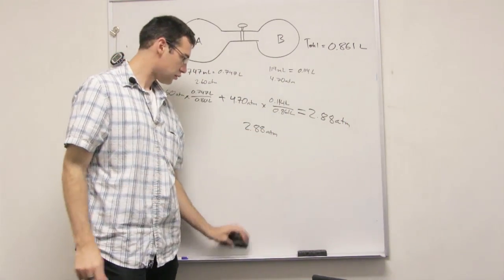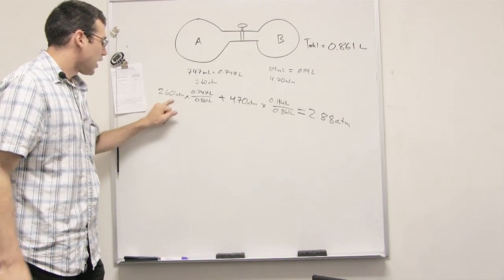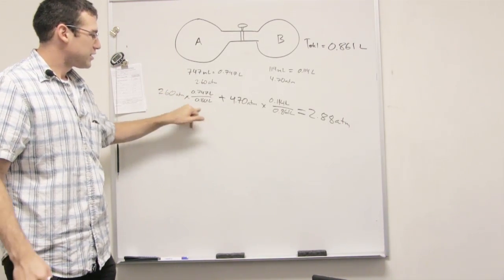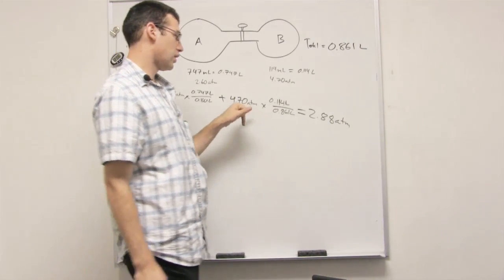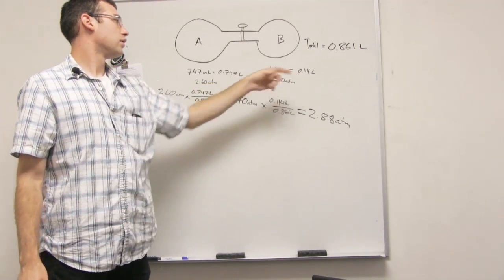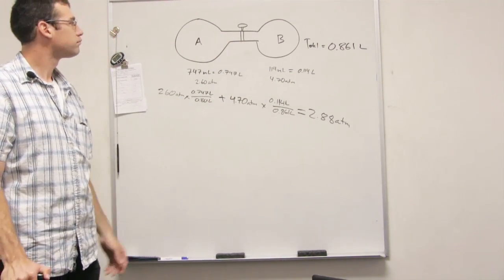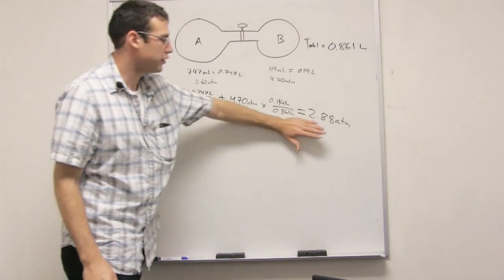Okay, sweet. So yeah, you basically have to take the atmospheres, multiply it by its percentage in part. Where did you get the 0.861? Oh, the total. It's the total, like the overall volume. And then you just add those partial pressures up and that will give you the... It should give you the new pressure. The total pressure, yeah.